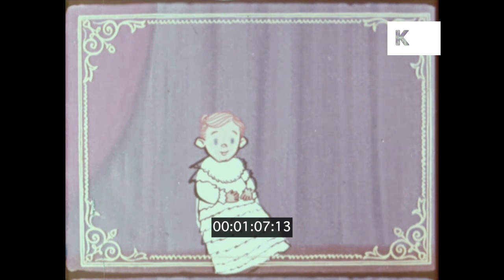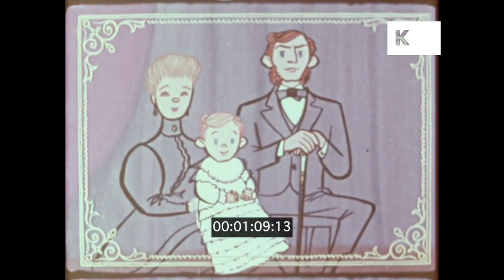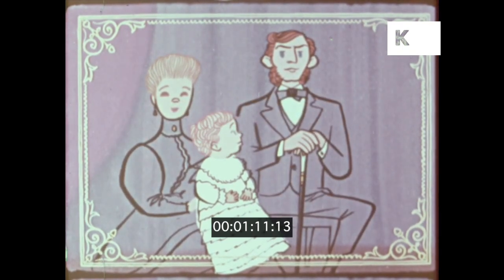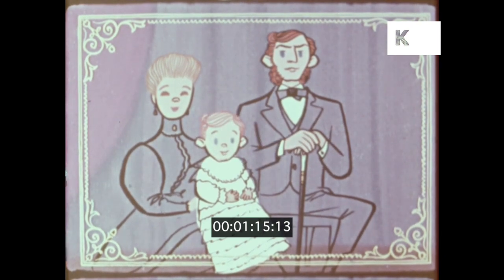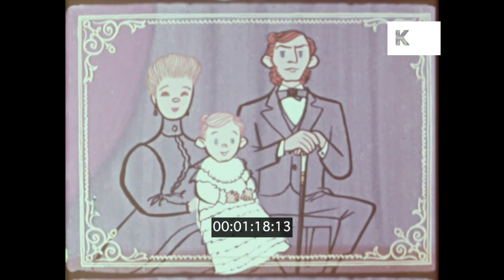Years ago, people believed a child's looks and actions were caused by the blood in its veins. Good blood, bad blood, blood relative are all expressions we still hear, and which suggest that blood somehow determines heredity.